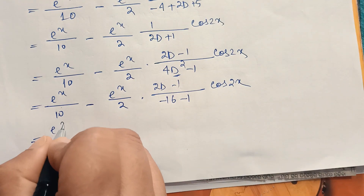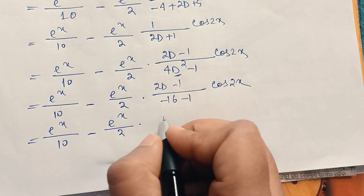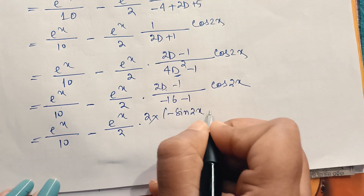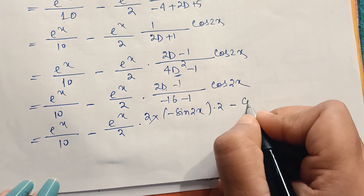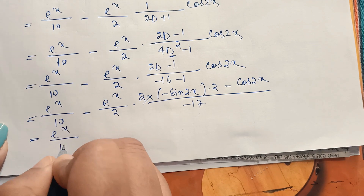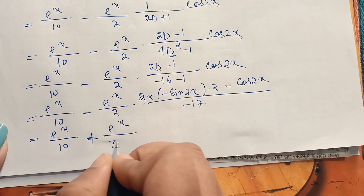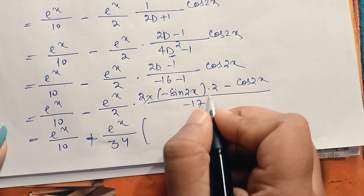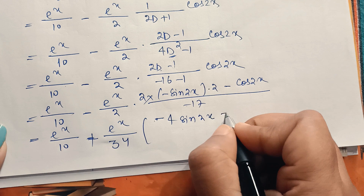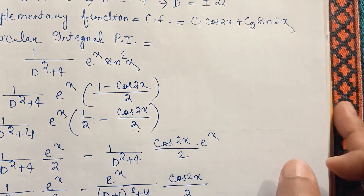Now, d/dx(cos2x) = -2sin2x, so 2D(cos2x) = 2·(-sin2x)·2 = -4sin2x. Therefore (2D - 1)cos2x = -4sin2x - cos2x. The two negatives give a plus, so the denominator is 17·2 = 34. Thus PI = eˣ/10 + eˣ/(34)·(-4sin2x - cos2x).